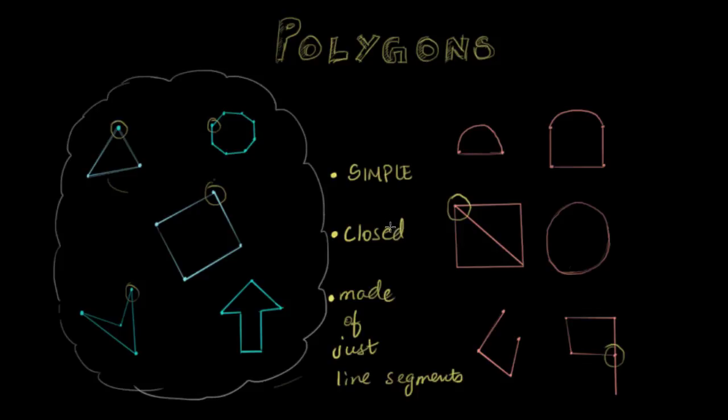So now I know that as long as a curve follows these three rules, it can be a member of this family that we call polygons: simple, closed, and made up of just straight line segments.